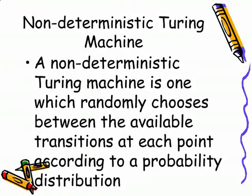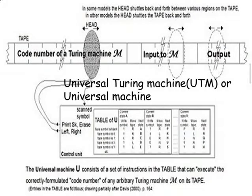A non-deterministic Turing machine is one which randomly chooses between the available transitions at each point according to a probability distribution. A universal Turing machine, or universal machine, is a Turing machine that is able to simulate any other Turing machine.